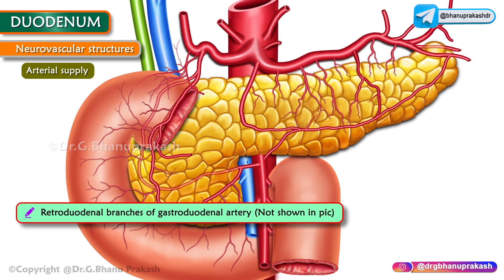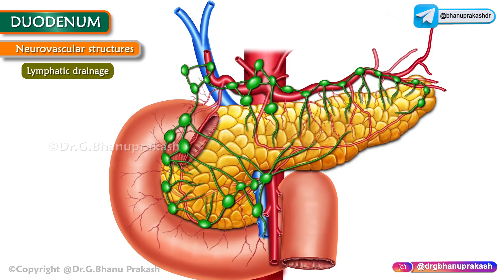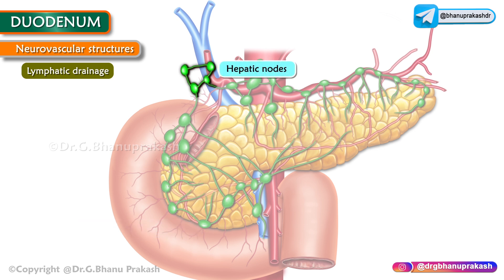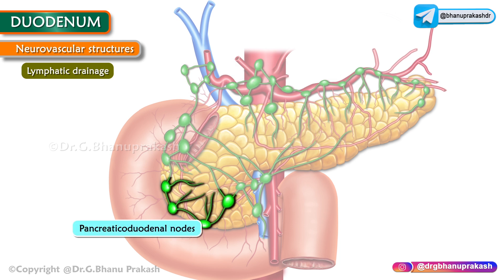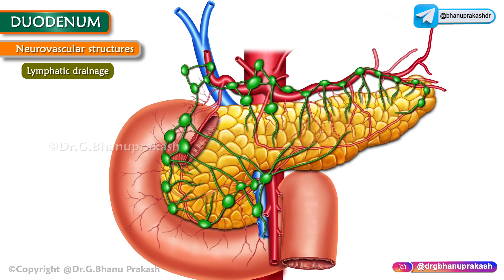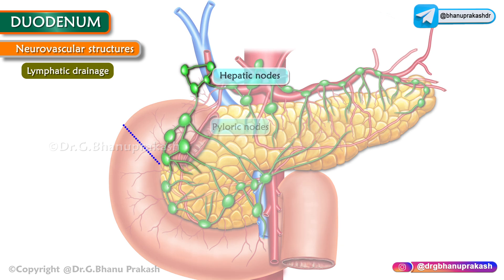The venous drainage of the duodenum drains into the splenic, superior mesenteric, and portal veins. For lymphatic drainage, the majority drains into pancreaticoduodenal nodes inside the curve of the duodenum. These drain into hepatic nodes and finally into celiac nodes. Some lymph from the pancreaticoduodenal nodes drains into superior mesenteric nodes and from there into the cisterna chyli. Some vessels from the first part drain into pyloric nodes, then hepatic nodes, and finally into celiac nodes — which also ultimately drain into the cisterna chyli.